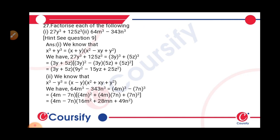We can write it as x plus y into x square minus xy plus y square, where x is equal to 3y and y is equal to 5z. So the answer will be 3y plus 5z into 9y square minus 15yz plus 25z square.